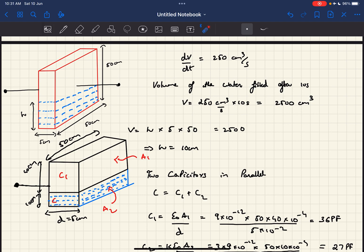Now we can also find the height through which it rises, because we can write the volume of this fluid as h times 5 times 50. Equating that to the volume, we get the height of the liquid as 10 cm after 10 seconds.